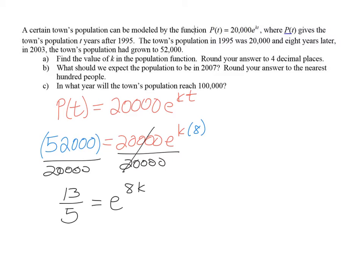Since the exponential part has been isolated, now we need to write both sides in terms of logs. Since we have a base e, we'll be using natural logs. To switch this over to logarithmic form, it becomes the natural log of 13 over 5 equals 8k.